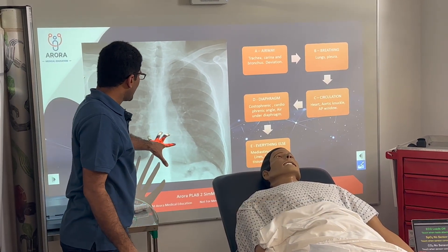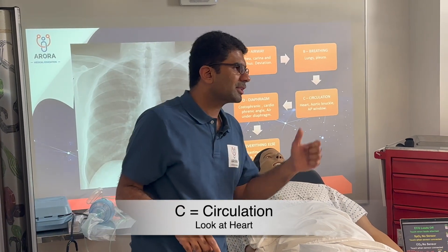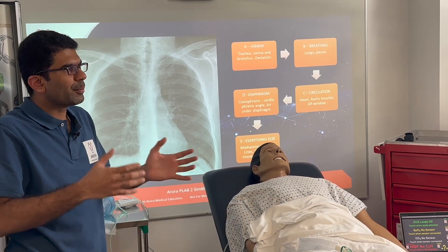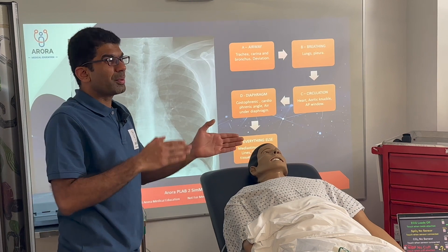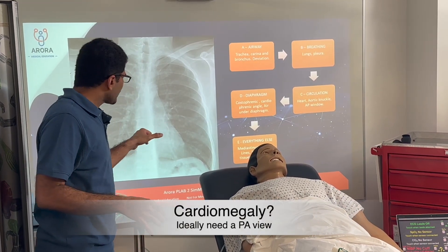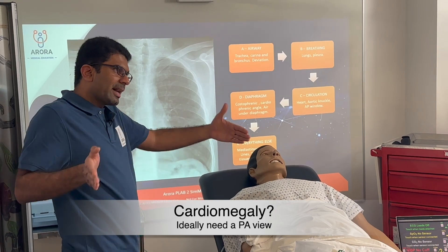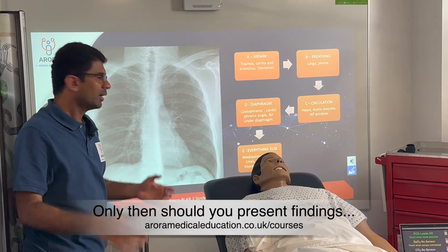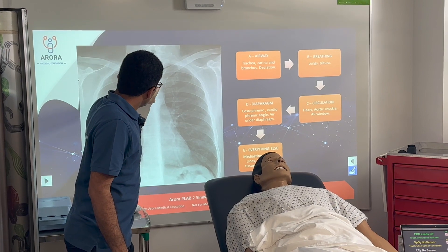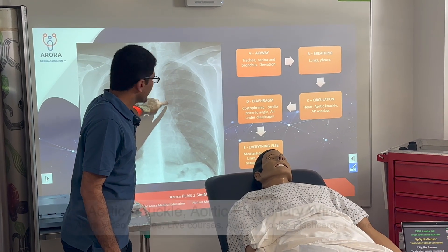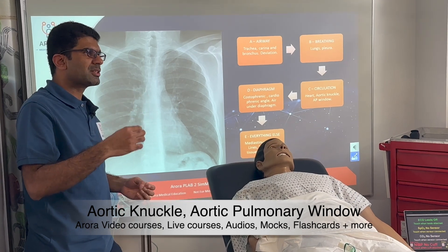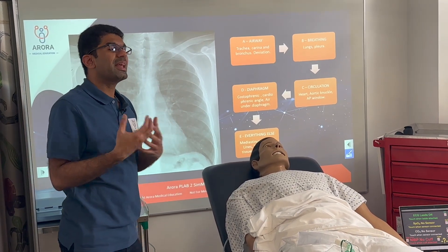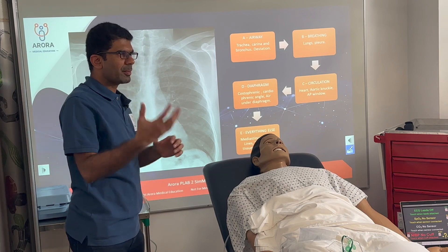C is for Circulation — you look at the heart. Remember, in an AP view the heart will appear a bit enlarged, so you can't comment on cardiomegaly on an AP view. You look for a PA view for that. Approximately, the heart should be less than 50% of the entire thoracic width; if it's more than that, you have cardiomegaly. Starting from the top, you have the aortic knuckle and then the aortopulmonary window. The aortic knuckle may be lost if there's an aneurysm, and the AP window may be obscured if there are enlarged lymph nodes from malignancy.